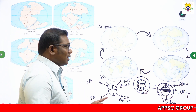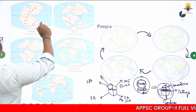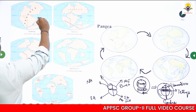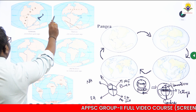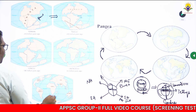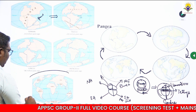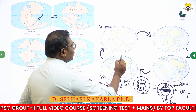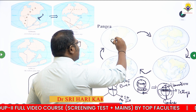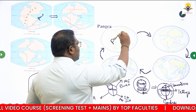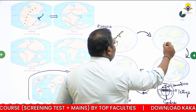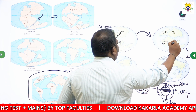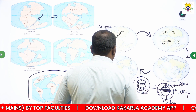Looking at this diagram: earlier this was called Pangaea. Pangaea was broken down into South America, North America, Eurasia, Africa, and Indo-Australia. The continents are still moving today. This is the essence of the Continental Drift Theory — the distribution of continents and oceans.